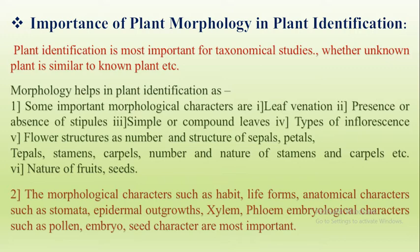The second set of characters is flower structure: the number and structure of sepals and petals, how many sepals and petals are present, whether they are sepals, petals, or tepals — tepals meaning they form the perianth — how many stamens and carpels are present, and the number and nature of stamens and carpels. Then the nature of fruit and seeds — all these are studied under important morphological characters of the plant.